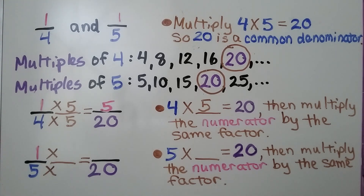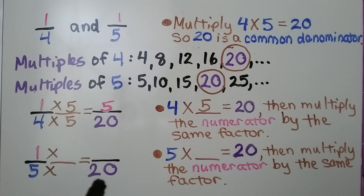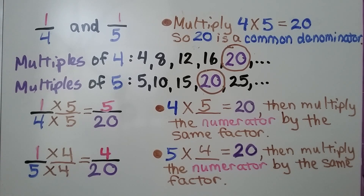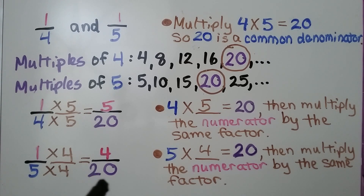We do the same thing with 1/5. 5 times some number is equal to 20 — 5 times 4 is equal to 20. We multiply the numerator by that same 4, and we get 4/20 as an equivalent fraction for 1/5.